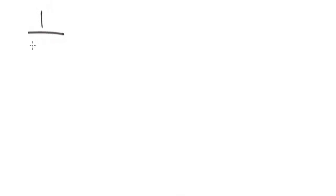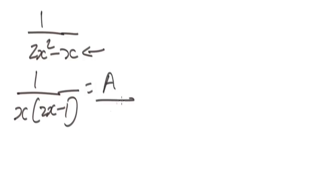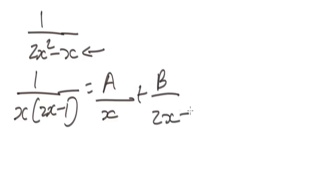Let's begin with this example. We are given the expression one over two x squared minus x, and we're asked to resolve it into partial fractions. Firstly, we need to factor the denominator, so we have one over x in brackets two x minus one. Now that we have these two factors, we split the fraction into A over x plus B over two x minus one. We are looking for the values of A and B.